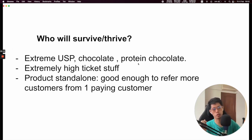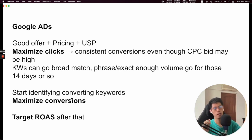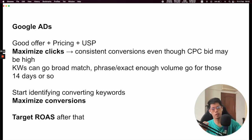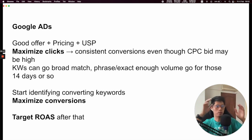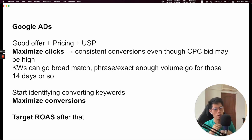For example, 'protein chocolate' is a keyword, it starts converting — you take that keyword, branch out into another campaign, and launch it as Maximize Conversions, and run that specific keyword there. This is a risk-free way — technically you're going out there, seeing what works and what doesn't, then you take whatever's working and just duplicate it. A lot of the times, people quit too early. When you quit too early, you're not going to see any results.